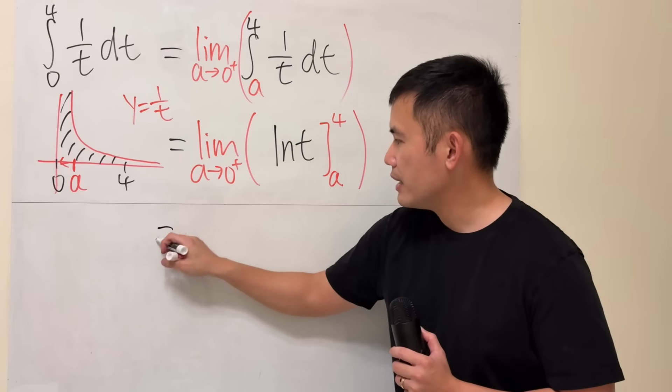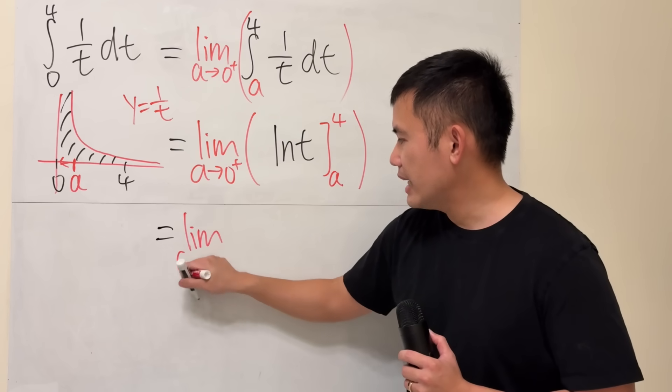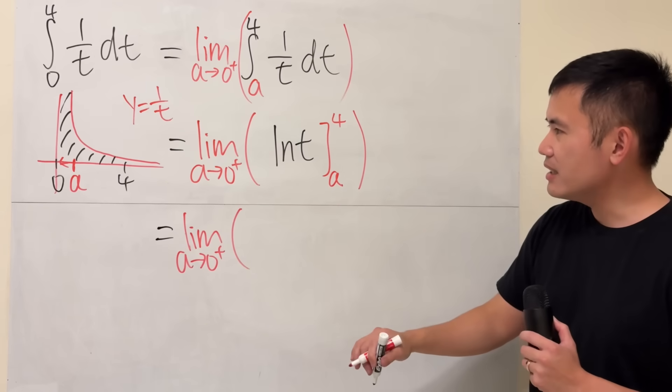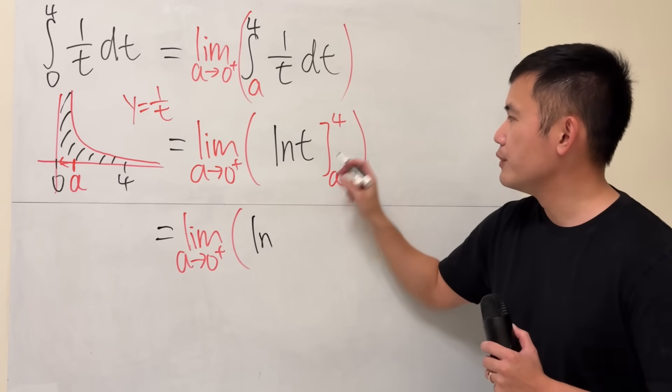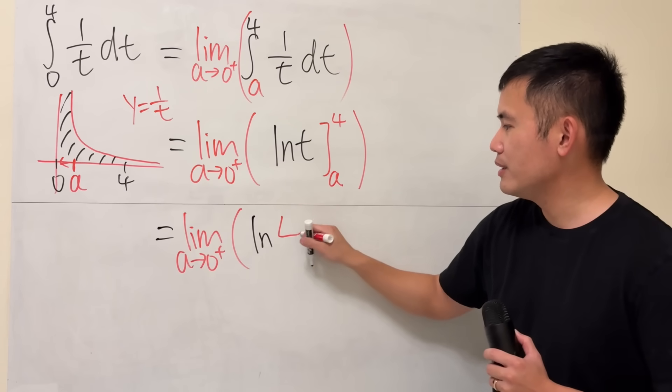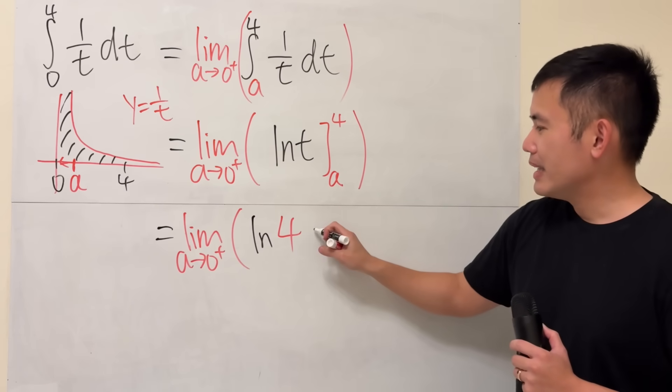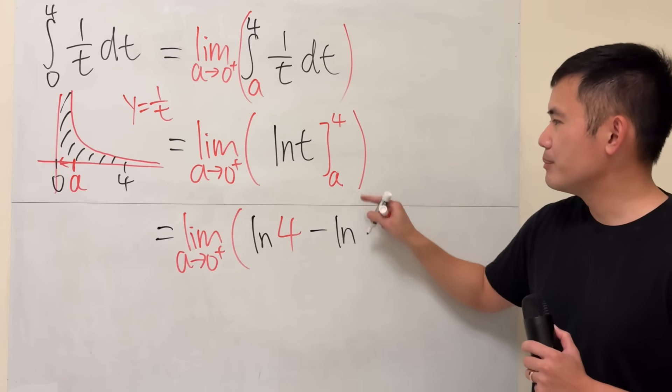We still have the limit as a approaching 0 plus on the outside. And we have ln 4. And that's totally okay. And then minus ln, put the a here.